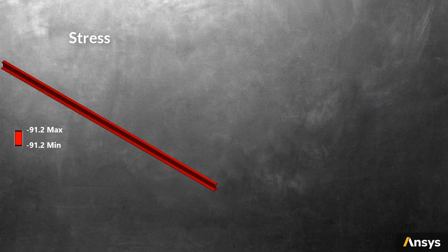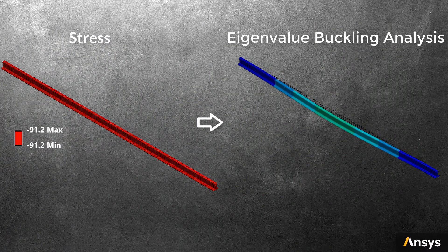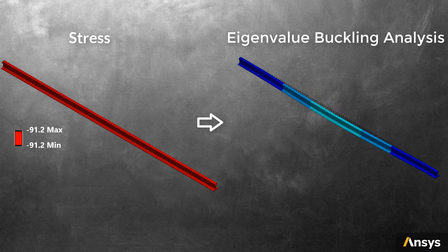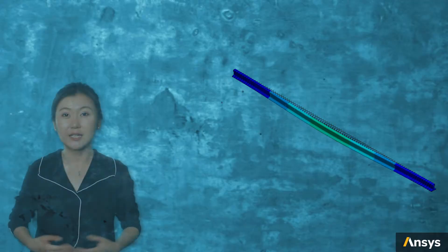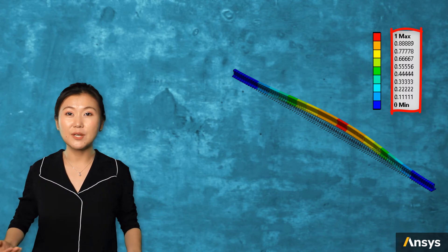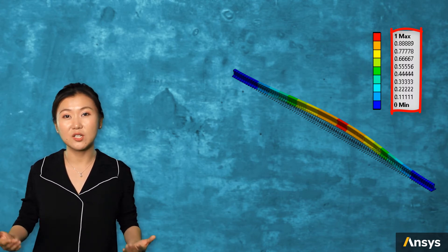With the internal stress caused by the thermal condition, we can conduct an eigenvalue buckling analysis to predict the deformation pattern of the rail segment. The deformation pattern obtained here is unitless. It's a deformation mode instead of absolute deformation value.